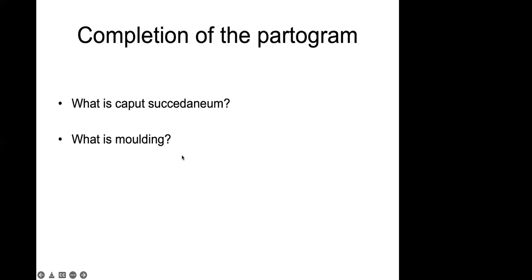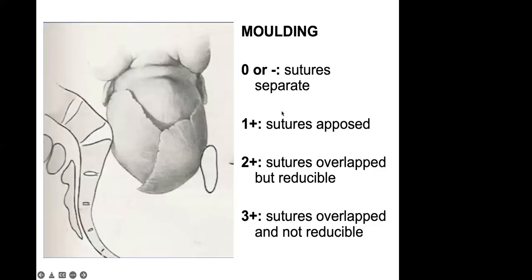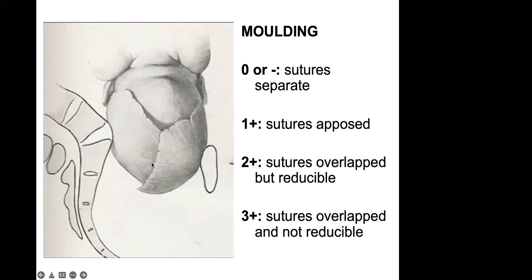Regarding caput: zero means no swelling of the fetal head; one plus is about one centimeter thick; two plus is two centimeters; three plus indicates generalized caput — generalized edema that may indicate cephalopelvic disproportion. Molding runs from zero to three plus. Molding is the molding of fetal skull bones to allow passage through the birth canal. The important molding is of the sagittal suture and parietal skull bones — sagittal molding, left to right, ear to ear. This is the smallest diameter of the fetal head, and CPD is when those sutures are overlapping and you cannot reduce them anymore.